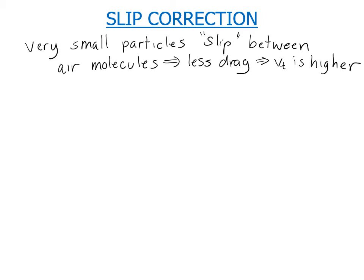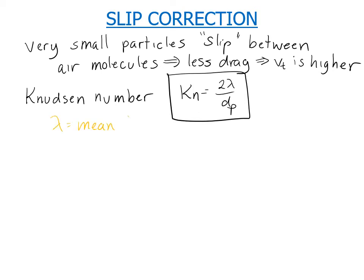And in order to parameterize this, we should start by talking about the Knudsen number, which is equal to 2 times lambda over d sub p, where lambda is the mean free path of gas molecules. You could think of it crudely as kind of the distance between them or how far they travel before bumping into another one. And at standard conditions, that distance is 0.065 micrometers.